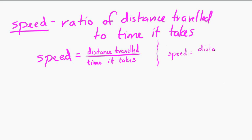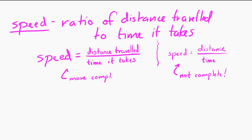But you have to be careful — that equation is not complete, and it can be misleading when we look at some circumstances. So if you're comfortable with the equation speed equals distance over time, that's nice, but keep in mind that's not the full definition. The distance is the distance that's been traveled, and the time is the time that it has taken to travel that distance.